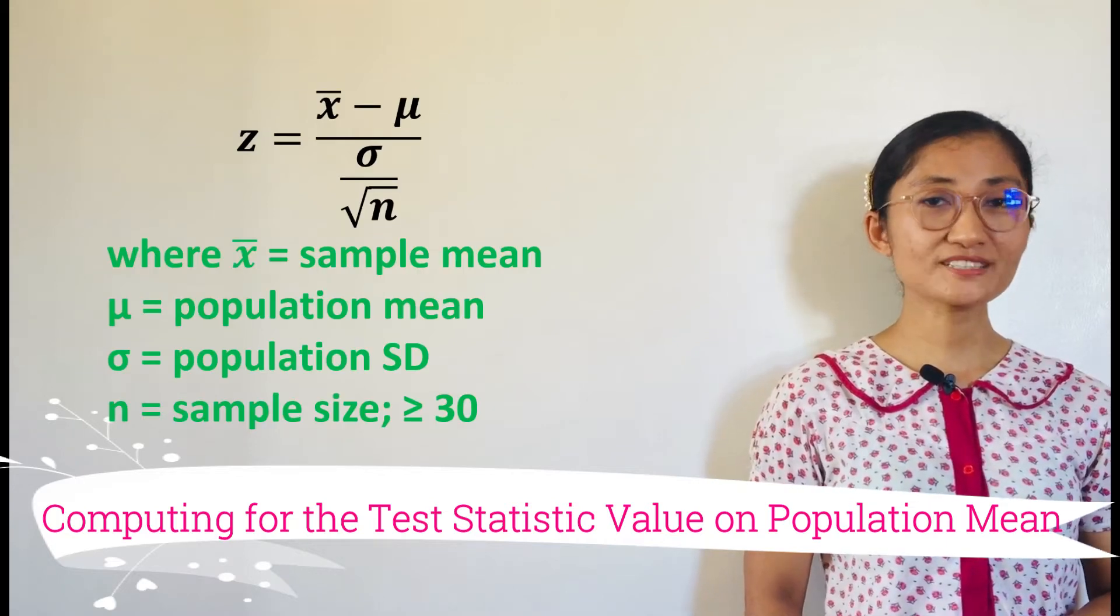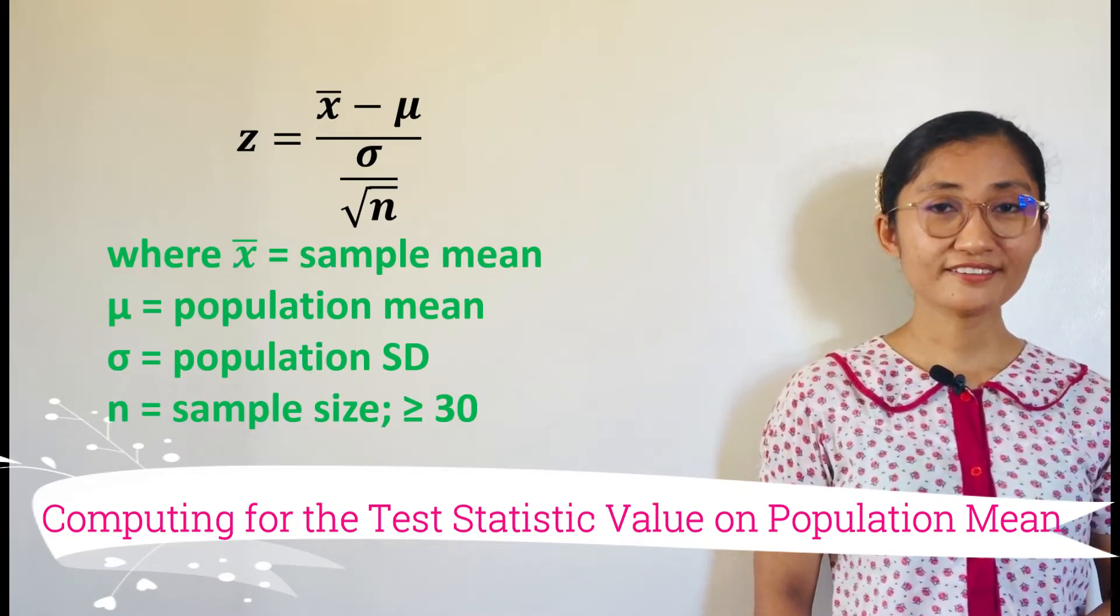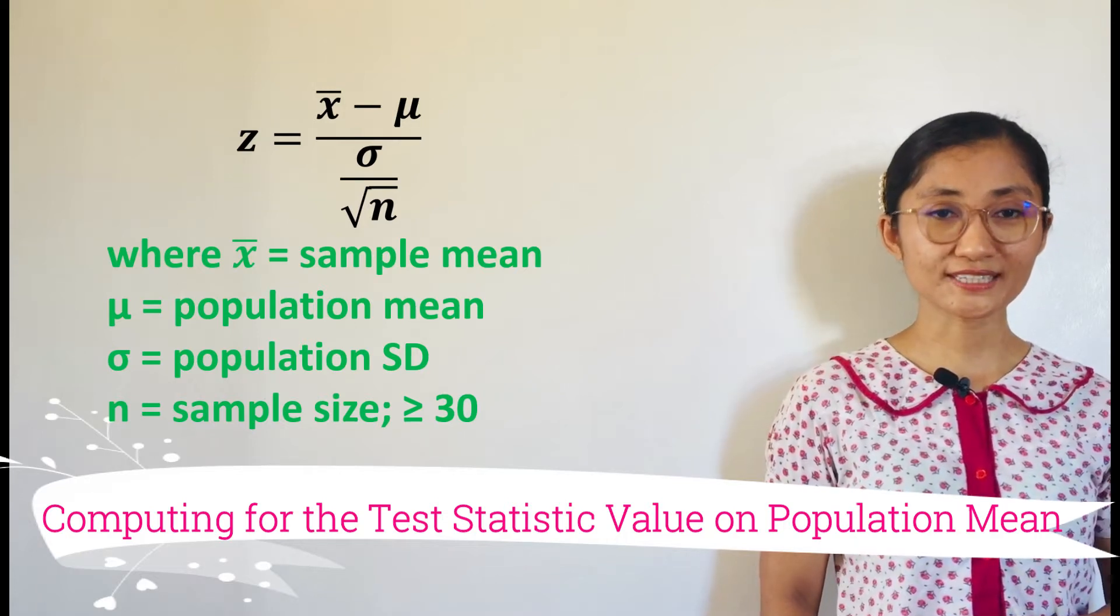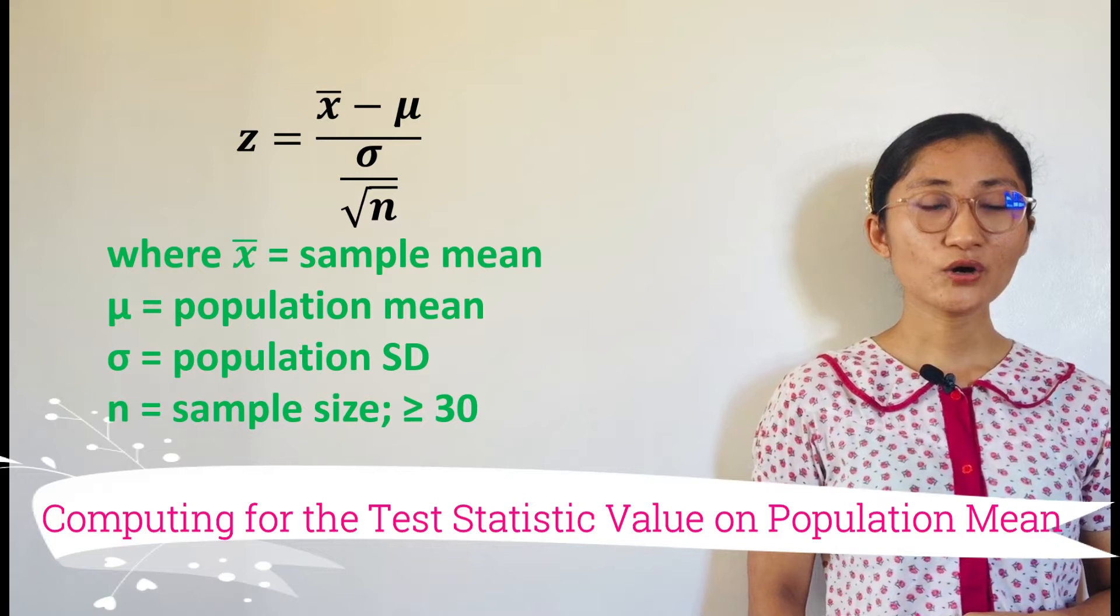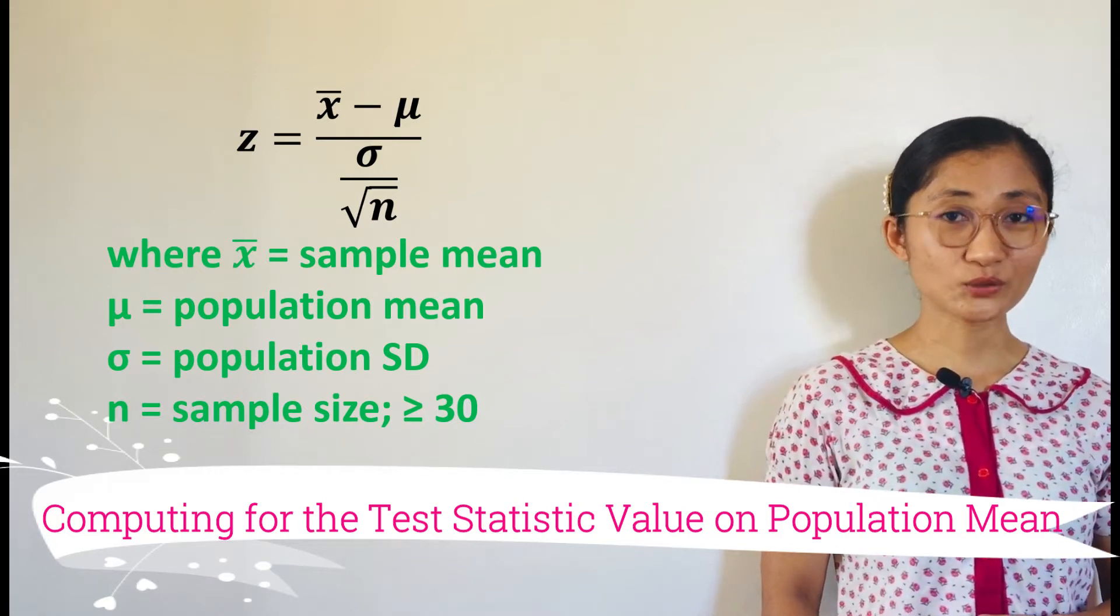Recall that if the sample size n is large, that is when n is greater than or equal to 30, and either the population standard deviation sigma or variance is known, Z-test is used.